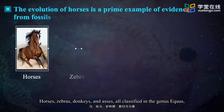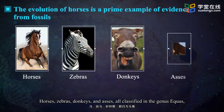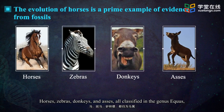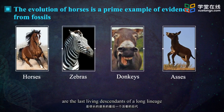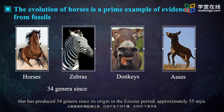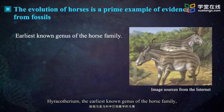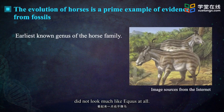Horses, zebras, donkeys, and asses — all classified in the same genus, Equus — are the last living descendants of a long lineage that has produced 35 genera since its origin in the Eocene period approximately 55 million years ago. Hyracotherium, the earliest known genus of the horse family, did not look much like Equus at all.